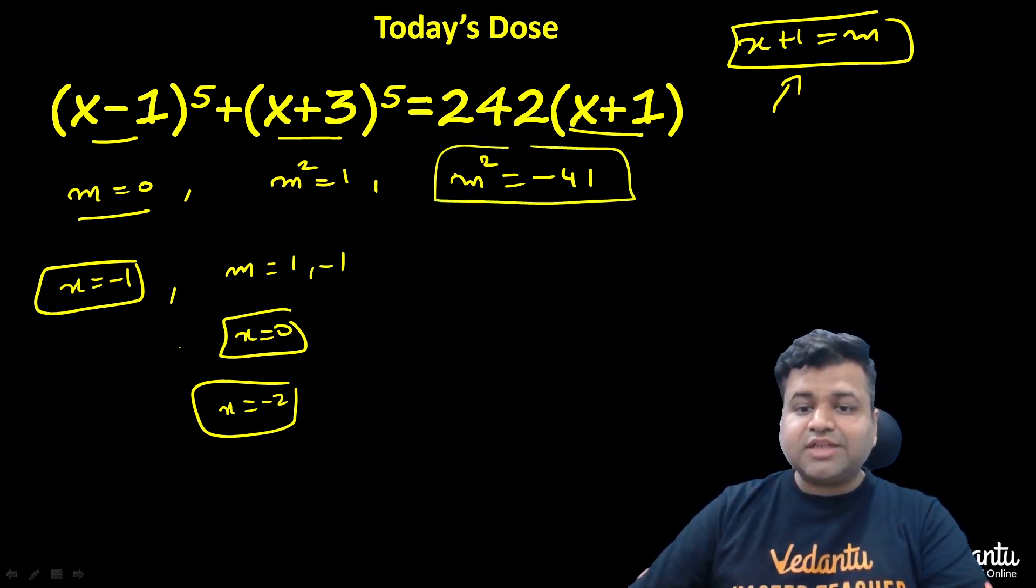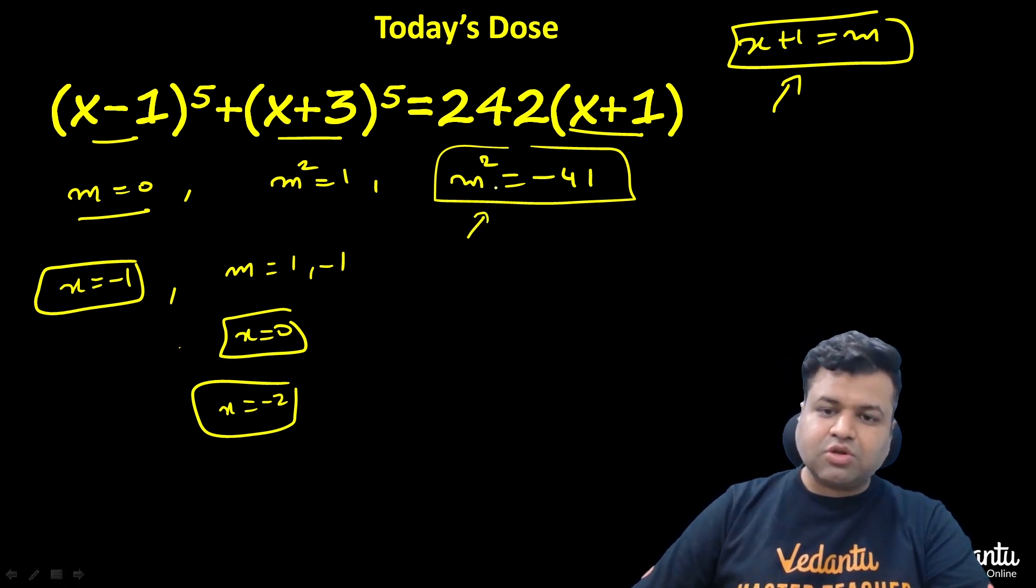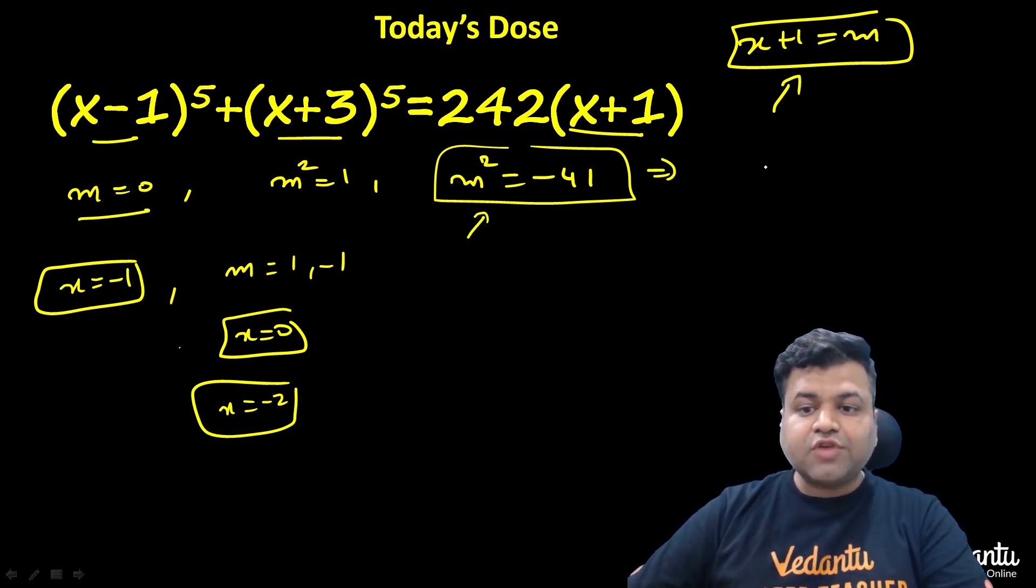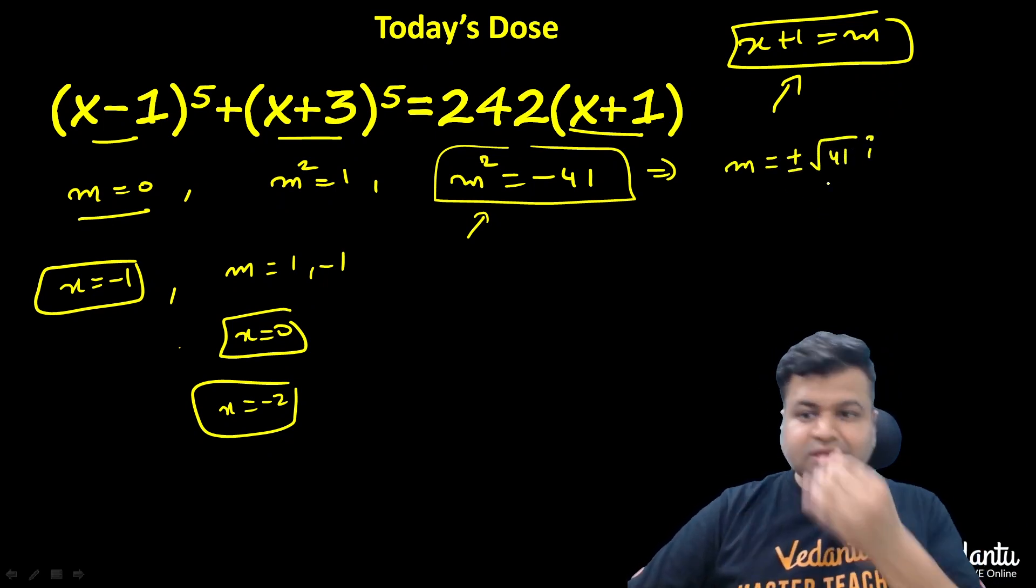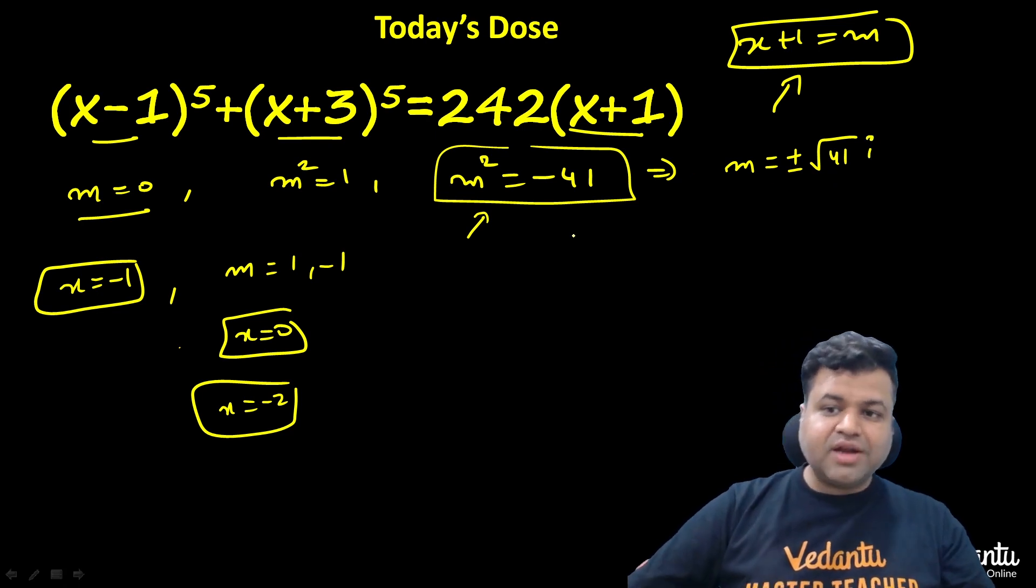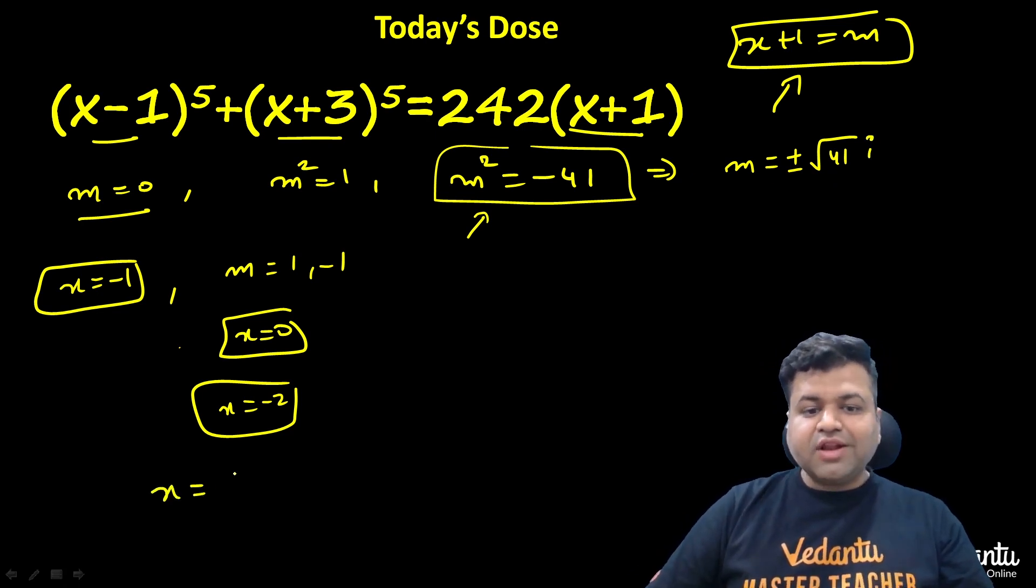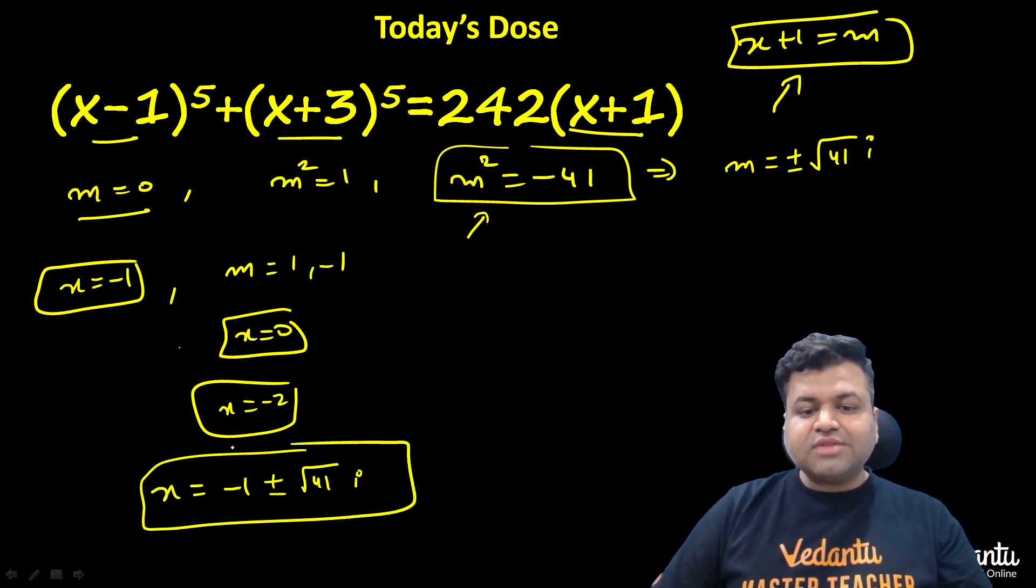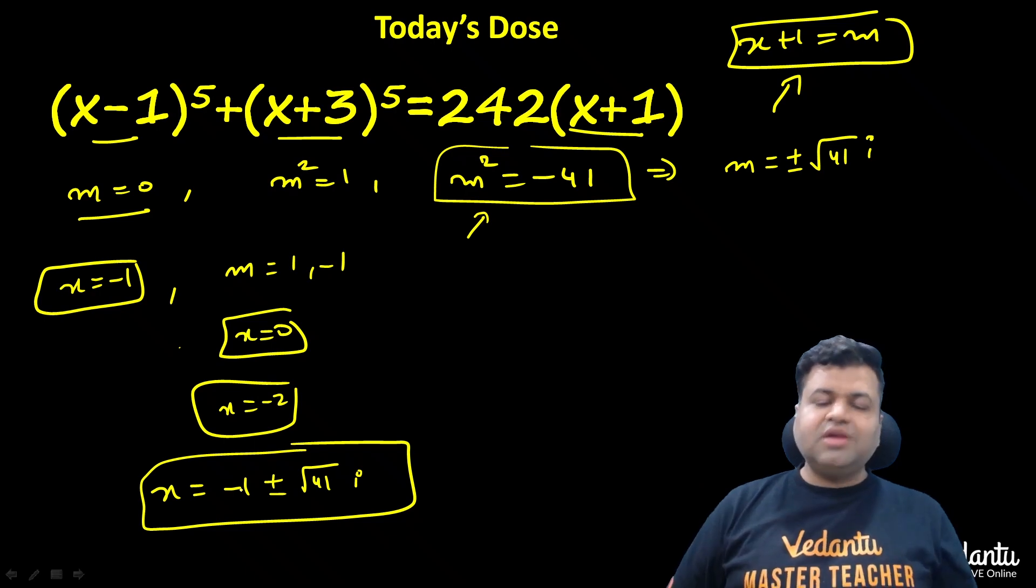But what happens when m^2 is minus 41? For this particular m^2 value, we will get imaginary solutions. If m^2 is minus 41, then m will be plus or minus square root of 41 times i. These are the two values that m will get. And that means x equals minus 1 plus or minus square root of 41 times i. These are basically the five solutions for this particular 5 degree polynomial.